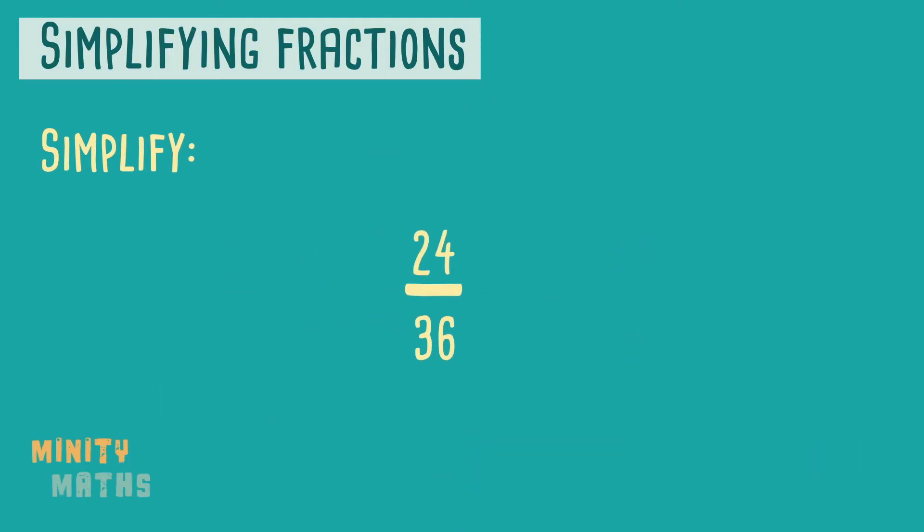Let's look at a question. If we are asked to write the fraction in its simplest form we could keep dividing by 2 until we reach the smallest numbers. Or we could simply try to think of the largest number that will divide into both 24 and 36. In this case it is the number 12.